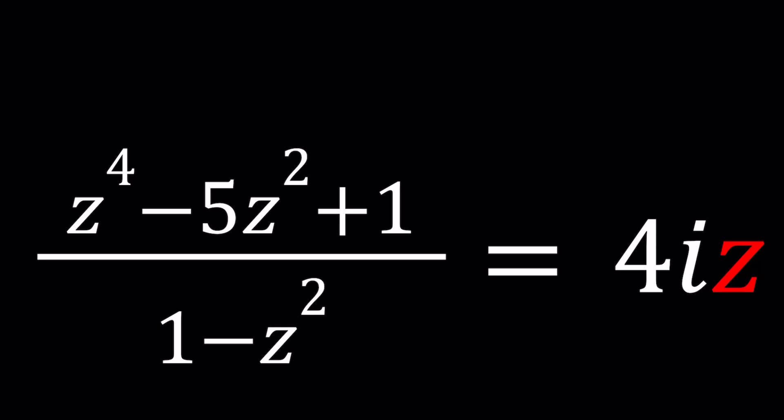We have z to the fourth power minus 5z squared plus 1 divided by 1 minus z squared equals 4iz, and we're going to be solving for z values.